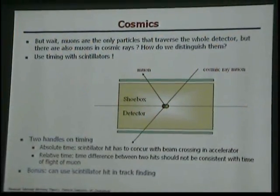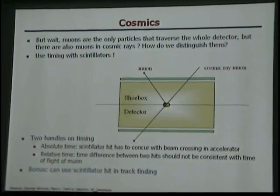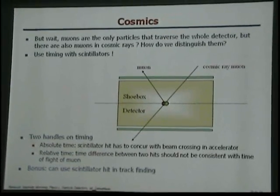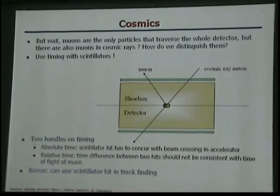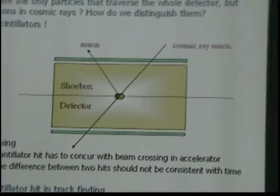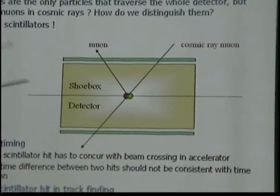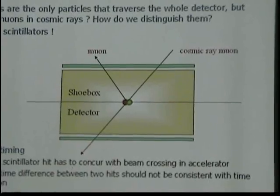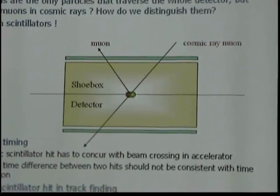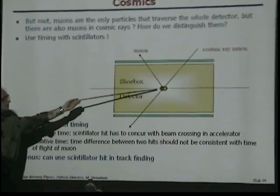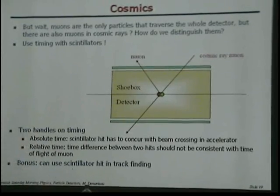With muons, you always have a problem with cosmics. With every detector, you have to filter real events from the background. There are muons in cosmic rays that come from the atmosphere. So how do you distinguish a real muon from a cosmic ray muon?